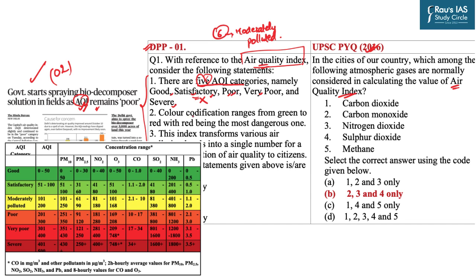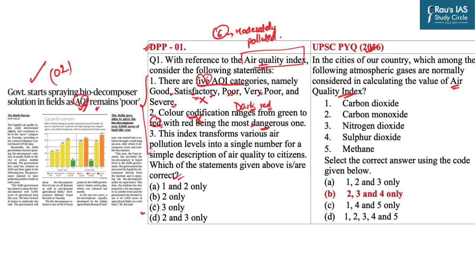Statement two says colour codification ranges from green to red, with red being the most dangerous. This also seems correct but is incorrect, because as far as AQI is concerned, after red there is also a dark red. So statement two is also incorrect, and therefore option C — statement three only — is the correct answer.